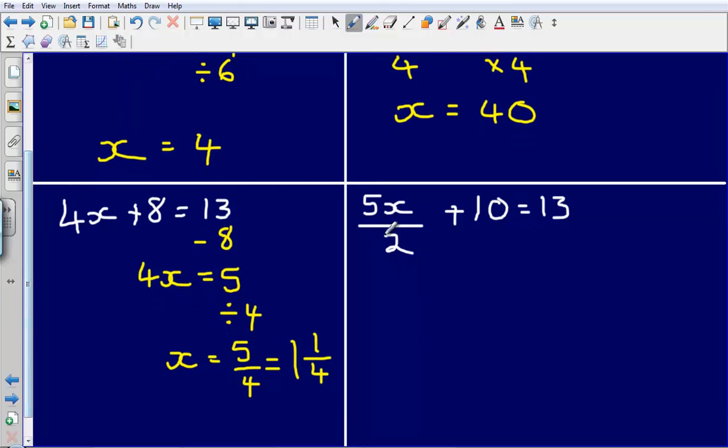Next up, I've got 5x divided by 2 plus 10 equals 13. Again, I'm going to get rid of this plus 10. I'm going to undo it by doing the opposite of it. So the opposite of plus 10 will be subtract 10. So that leaves me with 5x divided by 2 is equal to 13 minus 10 which is 3.